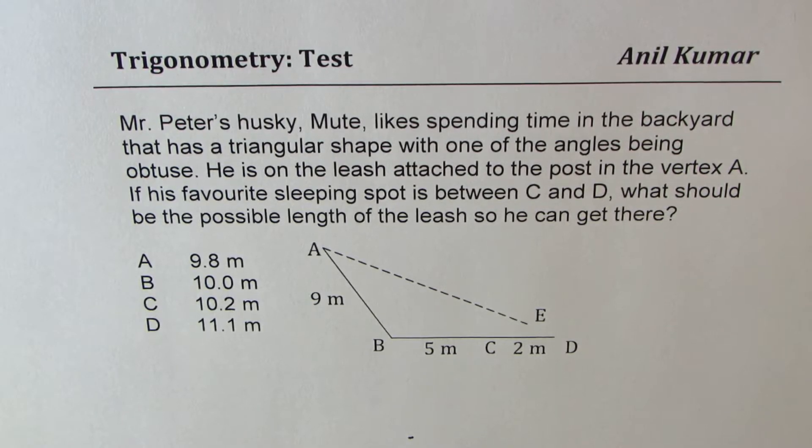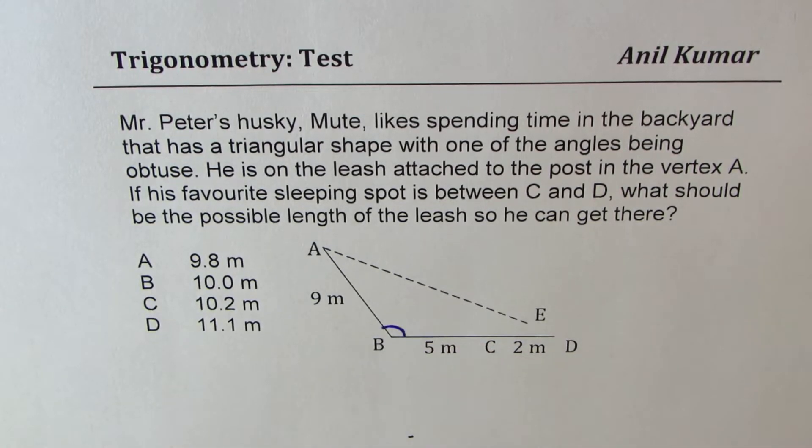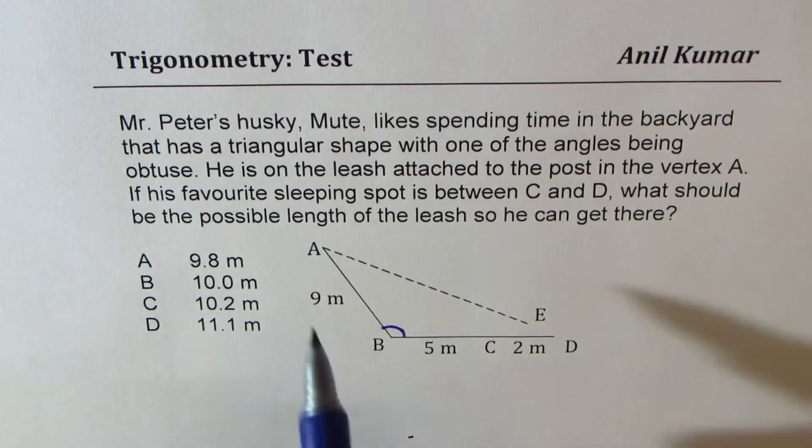Mr. Peters Husky, Mute, likes spending time in the backyard that has a triangular shape with one angle being obtuse. So that's the obtuse angle. He is on a leash attached to the post at the vertex A.